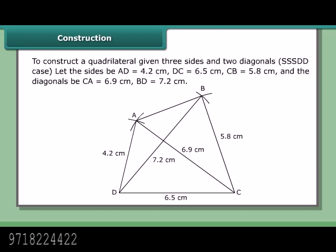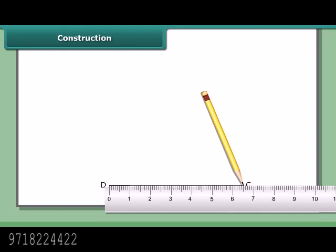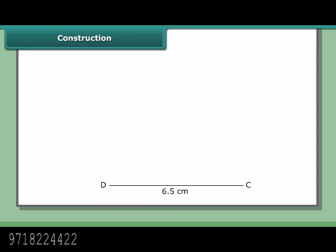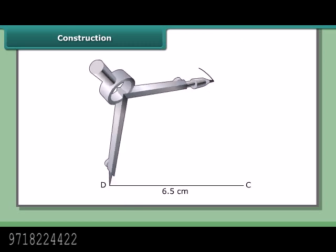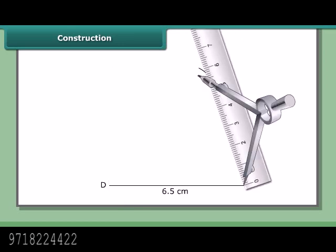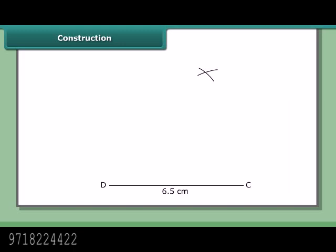Constructing triangle BCD: Draw DC = 6.5 cm. With D as center and radius 7.2 cm, draw an arc. With C as center and radius 5.8 cm, draw another arc to cut the previous arc at B. Join CB and DB.